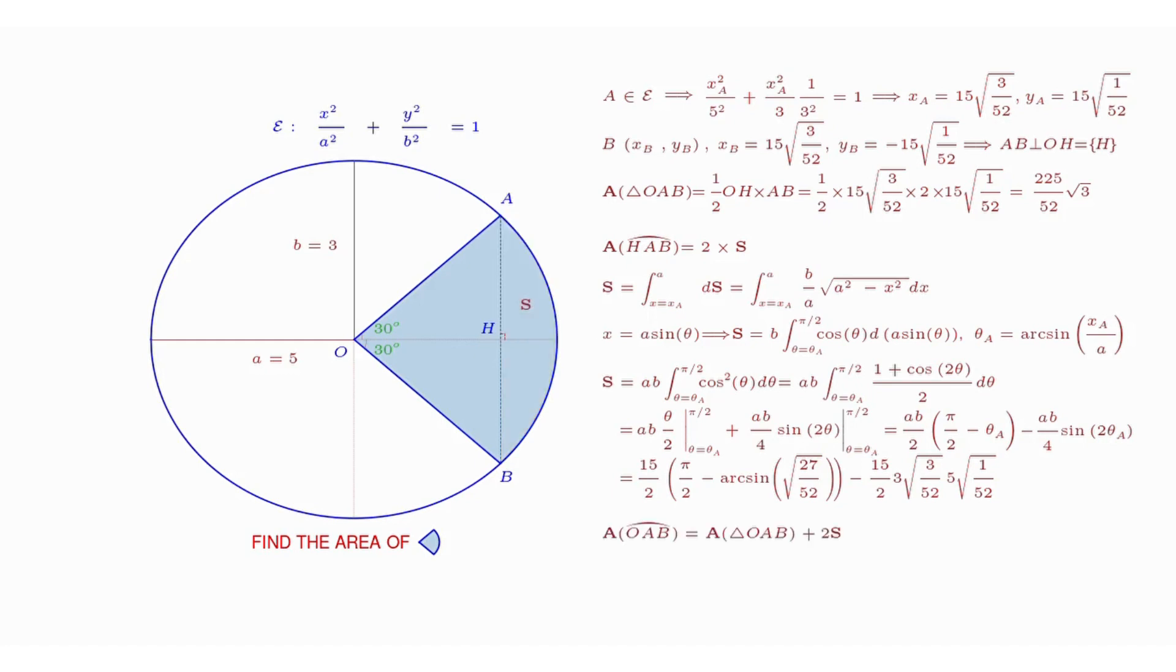Recall that the area of the light blue region equals the sum of the areas of triangle OAB and arc H-AB. Summing them up with the numerical values leads to the final result. Thank you for watching.